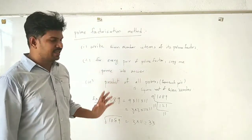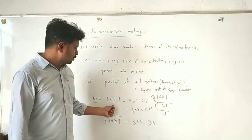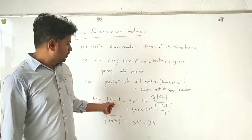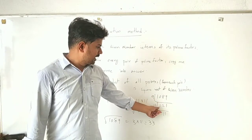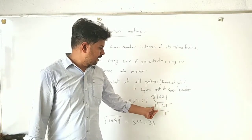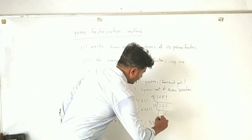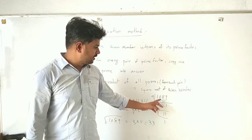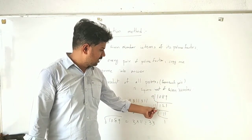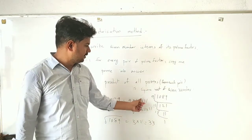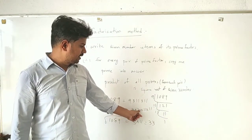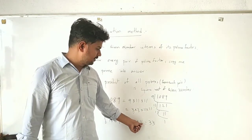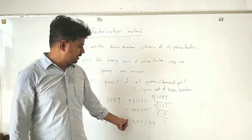This process is a hectic process, so let's take a simple example. Take 1089 — you are asked to find the square root of 1089. If you divide 1089, you get factors 9, 11, and 11. Then 9 can be written as 3 times 3, and 11 times 11. For each pair, copy one: copy 3, copy 11. So 3 times 11 equals 33, which is the square root of 1089.